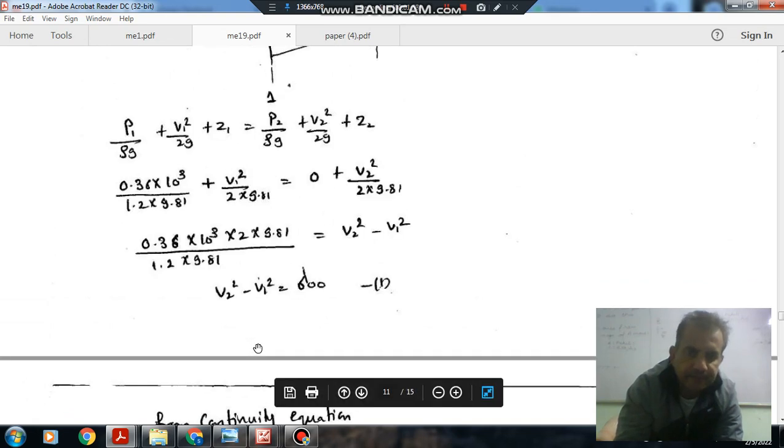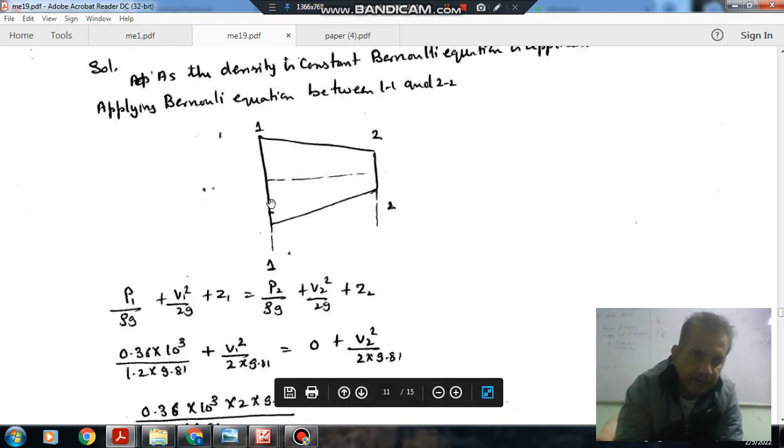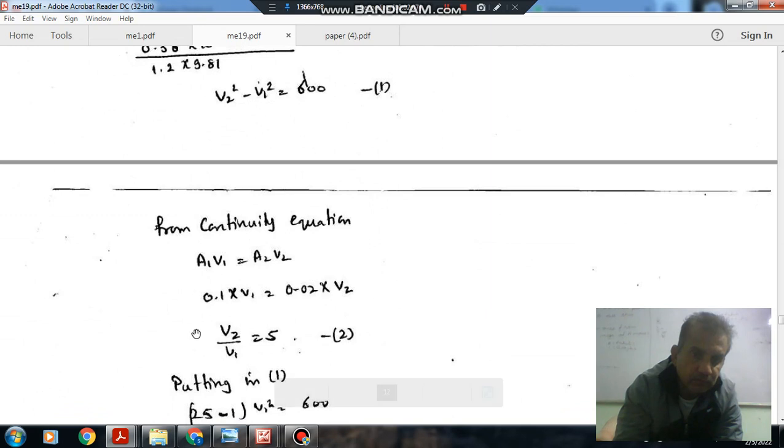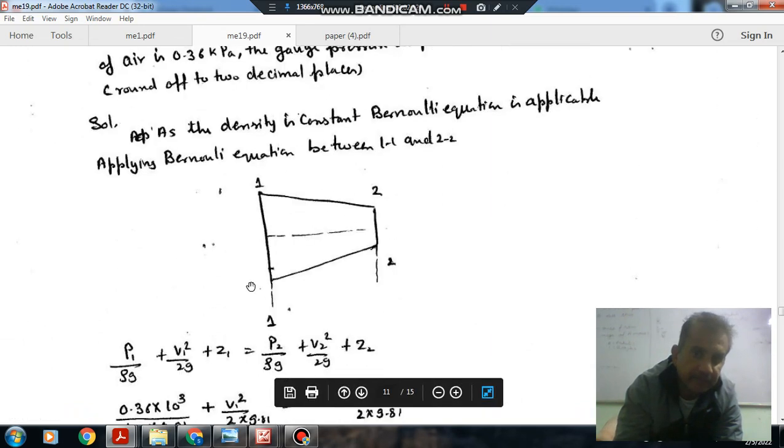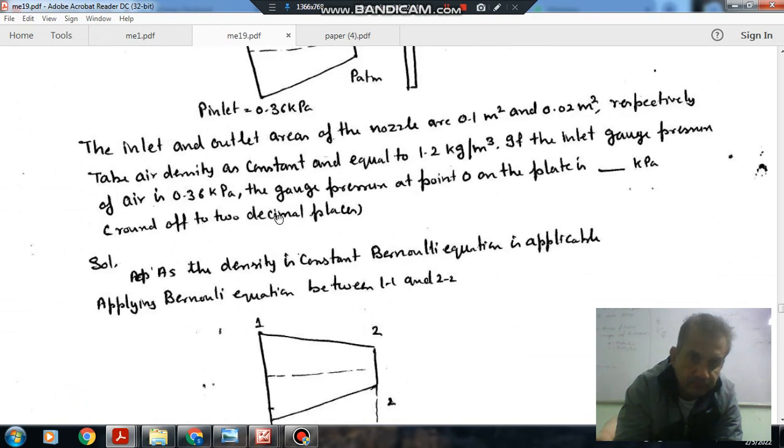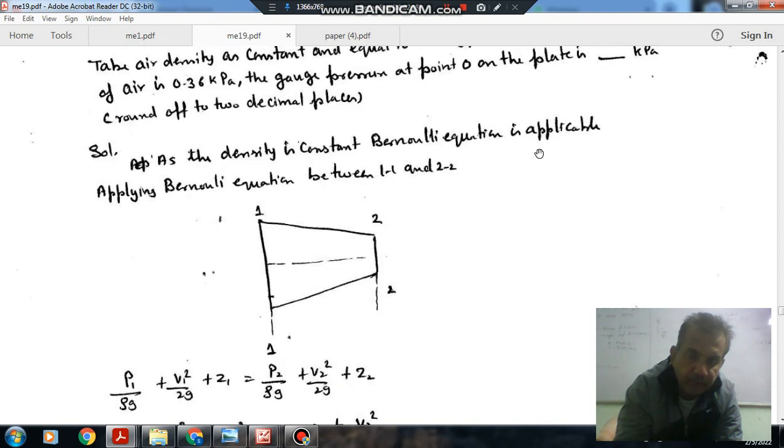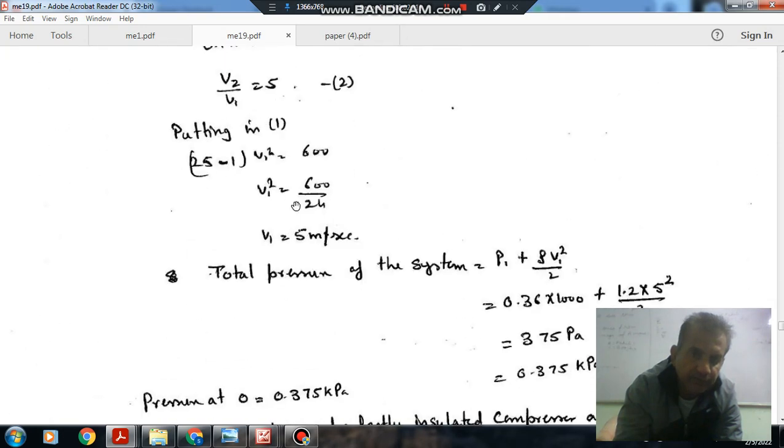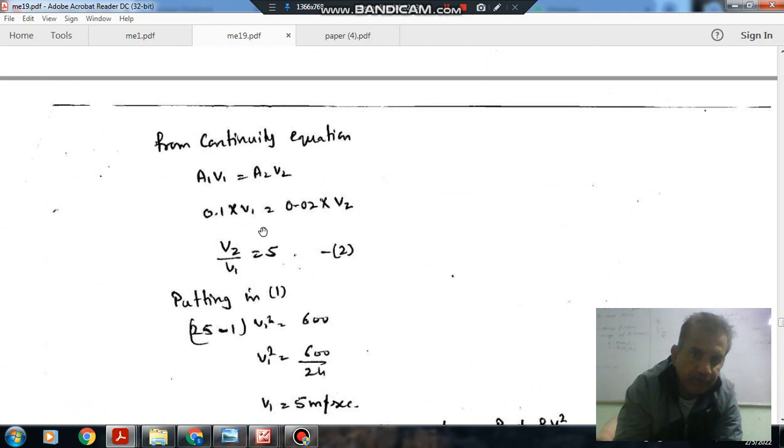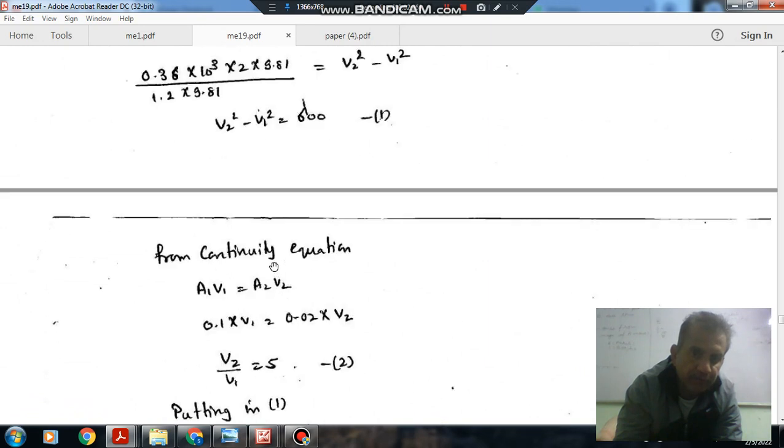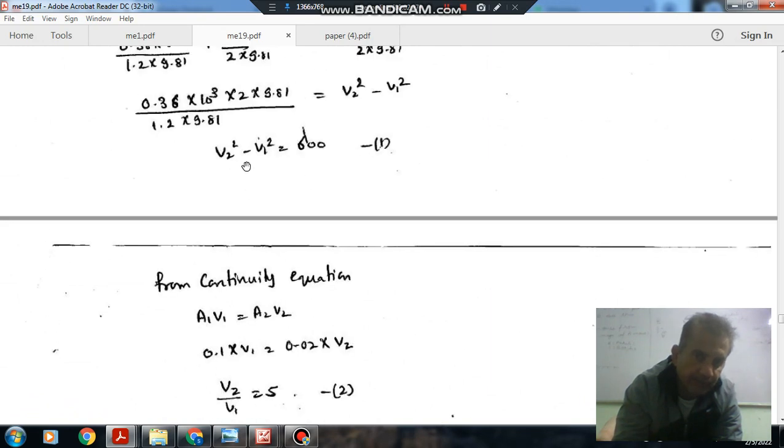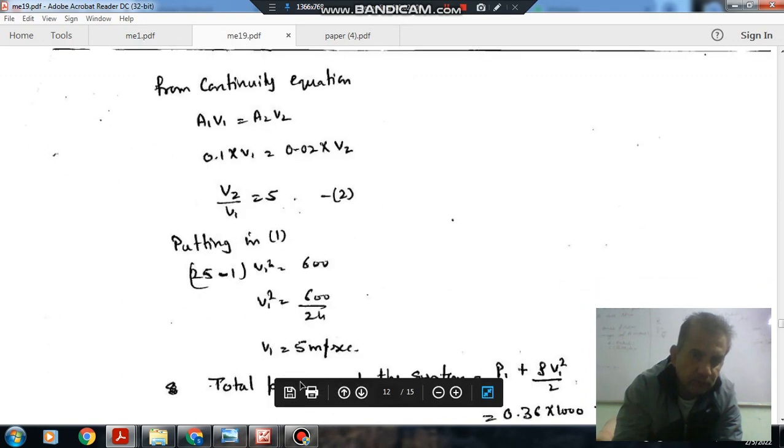Now from continuity equation, we can apply Bernoulli's equation at 1 and 2. So A1V1 equals A2V2. A1 is 0.1 and A2 is 0.02. Putting the values of A1 and A2, we can find out the ratio V2 by V1 is 5. This is the ratio.